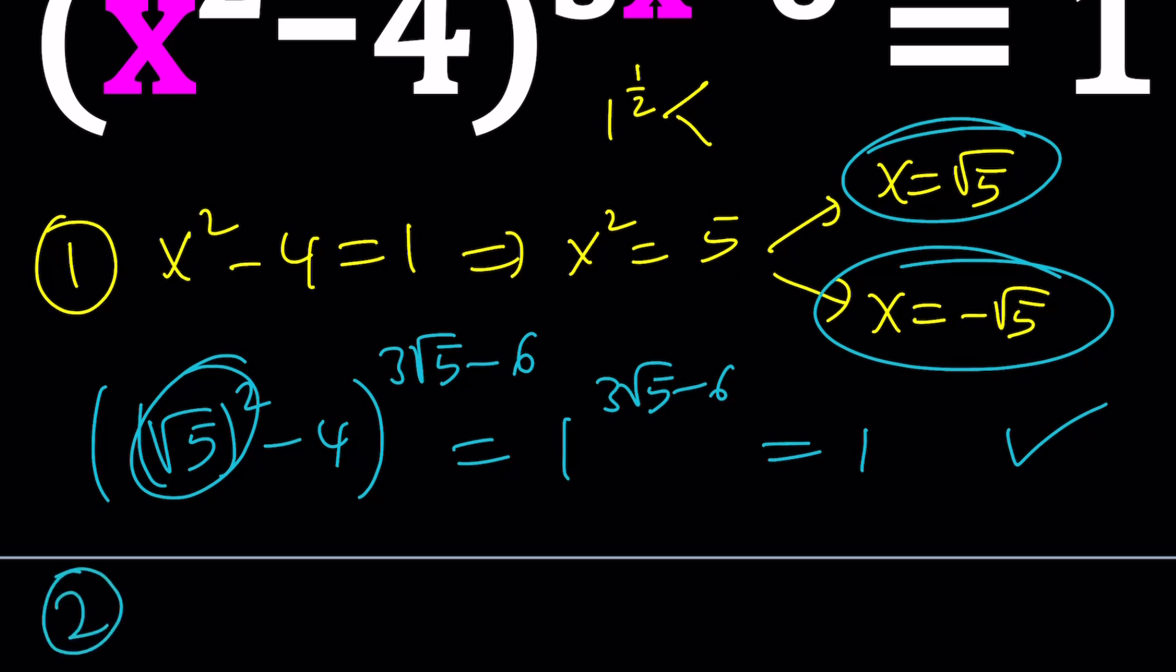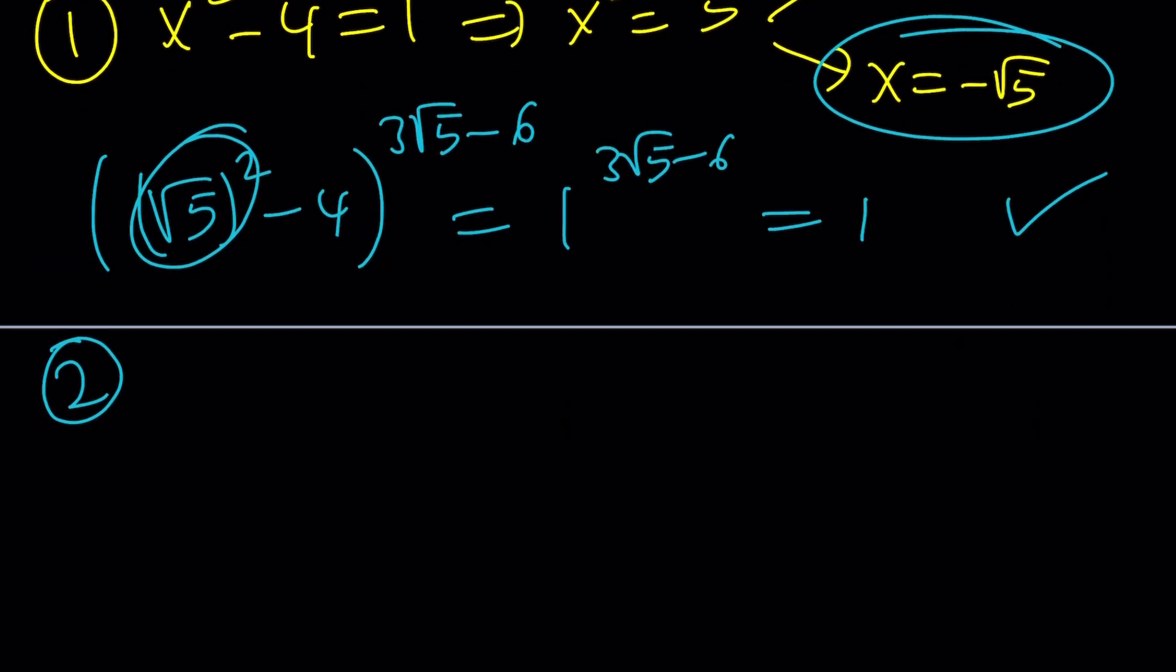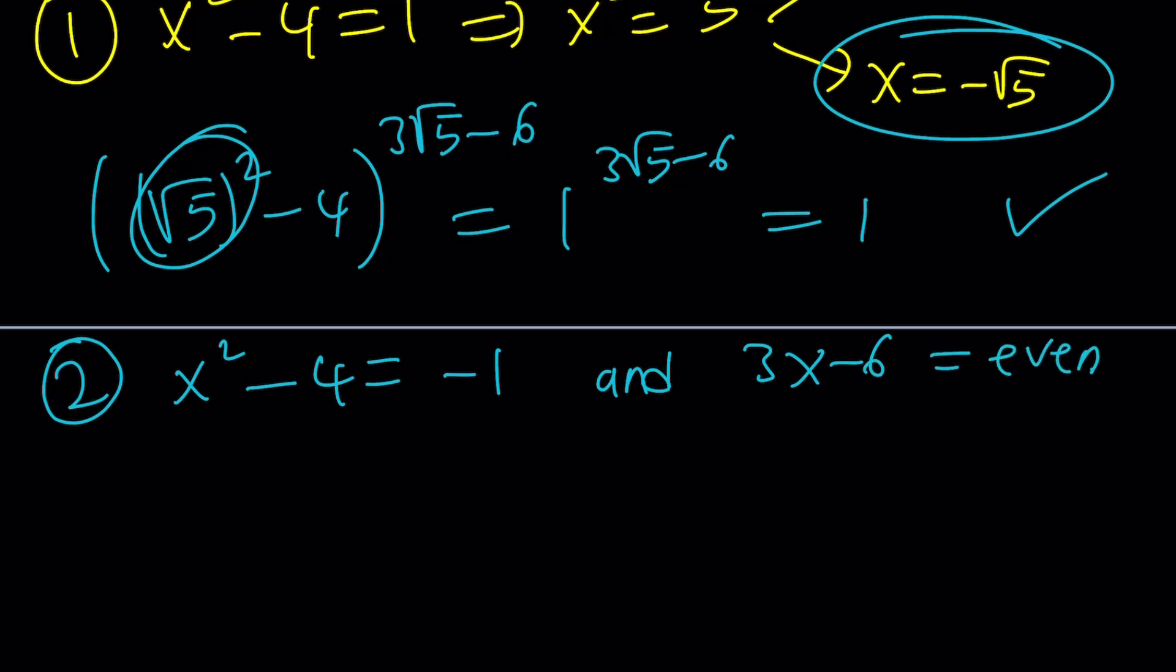Second case is basically assuming that the base is negative 1, and the exponent being even. But of course, this requires that x is a nice value, like an integer maybe, or at least 3x minus 6 is an integer. So x kind of must be divisible by 3 maybe. Anyways, you get the idea. Let's add 4 to both sides. x squared equals 3.